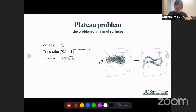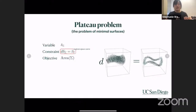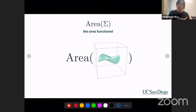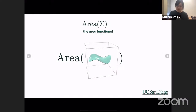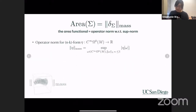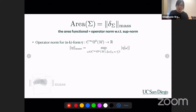As a result, going back to Plateau's problem, we can change our constraint into this exterior derivative, which is a linear constraint. Now let's reformulate the area functional. We claim the area functional is the same as the mass norm of our Dirac delta form. The mass norm is the operator norm of this differential form with regard to the L-infinity norm. The L-infinity (sup) norm is understood as taking the local Euclidean norm and taking the pointwise supremum. For a two-form viewed as a vector field, you take the square of each component and then the square root.